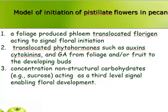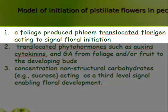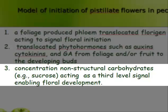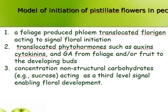He proposed three sequential phases that control pistillate flower initiation in pecan. They include: 1. A foliage-produced phloem-translocated florigene acting to signal floral initiation. 2. Translocated phytohormones such as auxins, cytokinins, and gibberellins from foliage and/or fruit to the developing buds. 3. The concentration of non-structural carbohydrates such as sucrose acting as a third-level signal enabling floral development. Thus, plant growth regulators and carbohydrate levels are both involved in alternate bearing.